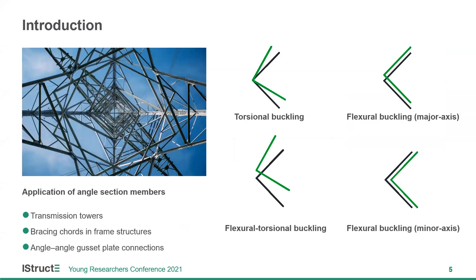However, despite the simple cross-section geometries of angle sections, their buckling behavior can be rather complicated. The basic buckling modes include torsional buckling and flexural buckling about the major axis and minor axis. For intermediate angle section columns, the typical failure mode is flexo-torsional buckling, which is the combination of torsional buckling and flexural buckling about the major axis. This failure mode is also the focus of my current research.